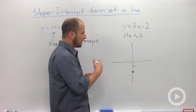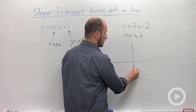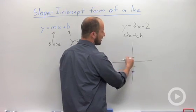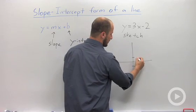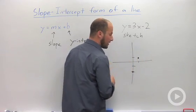Slope is rise over run, so that tells us we're going to go up 3: up 1, up 2, up 3, then go over 1. We get our next point.